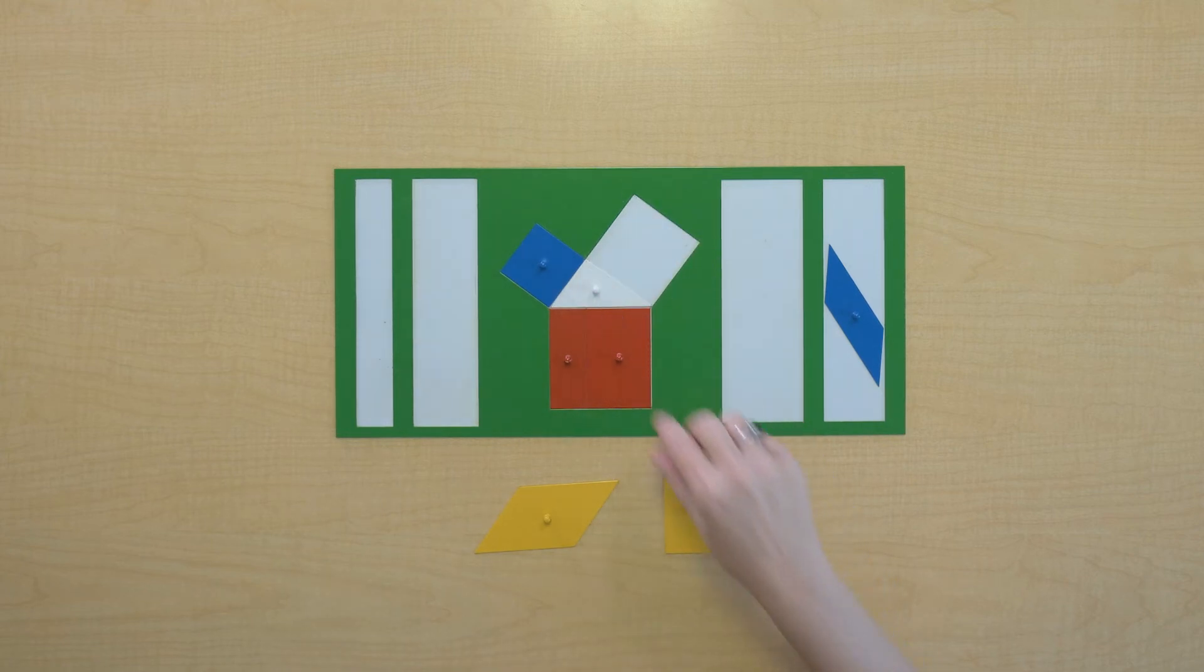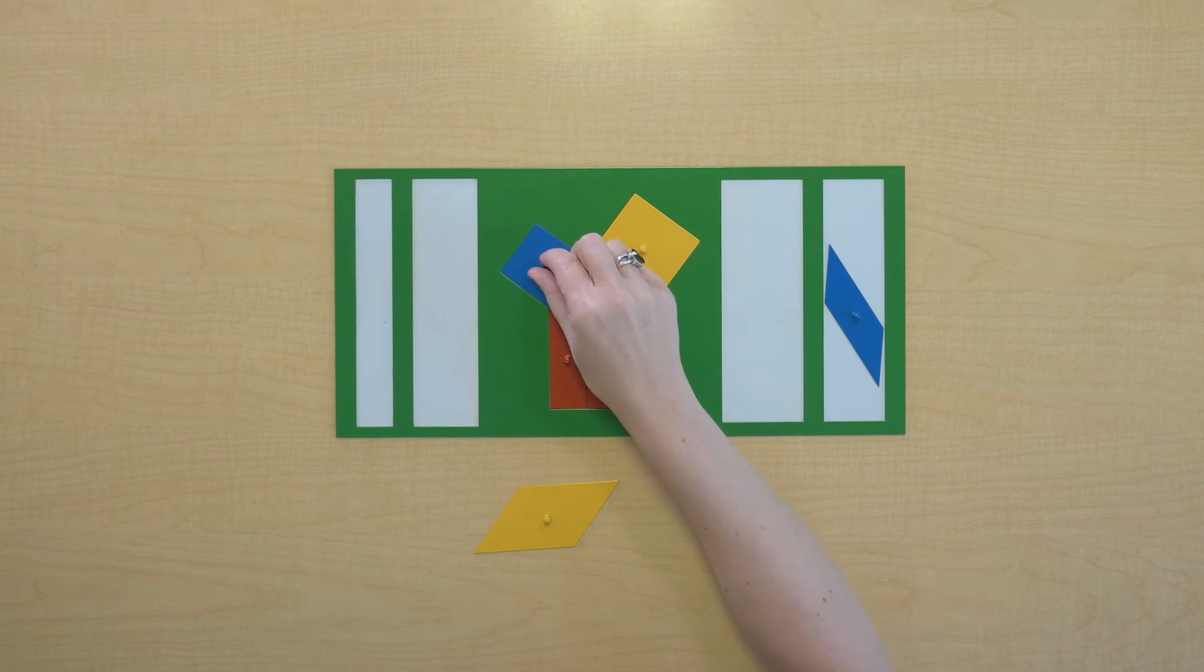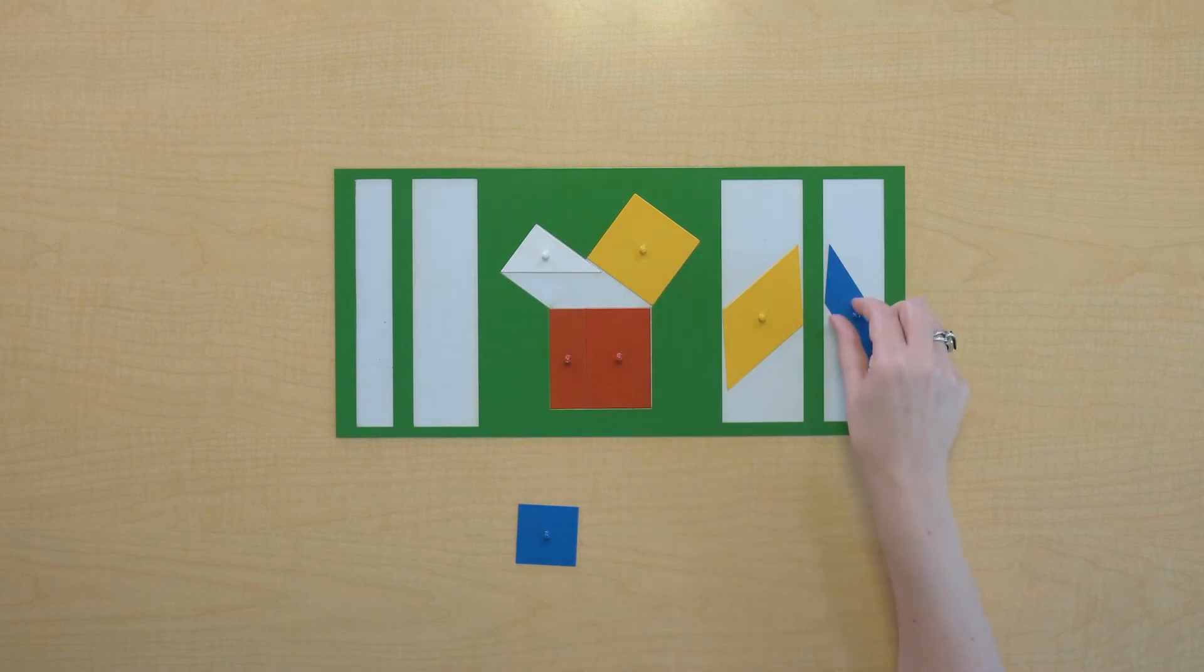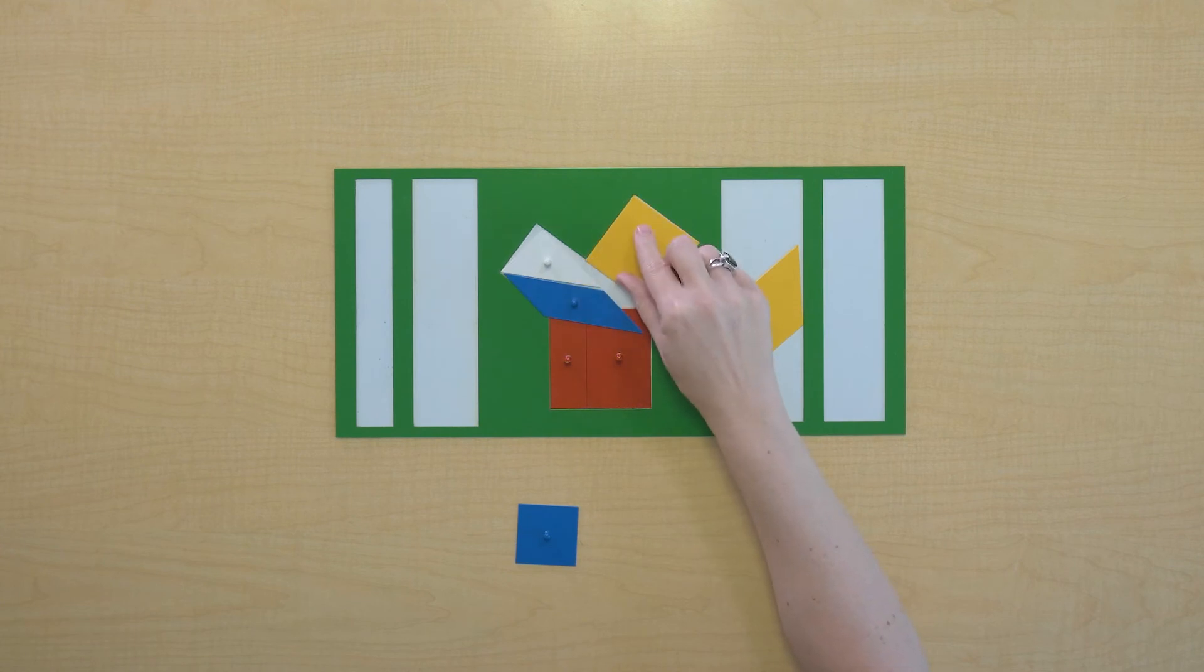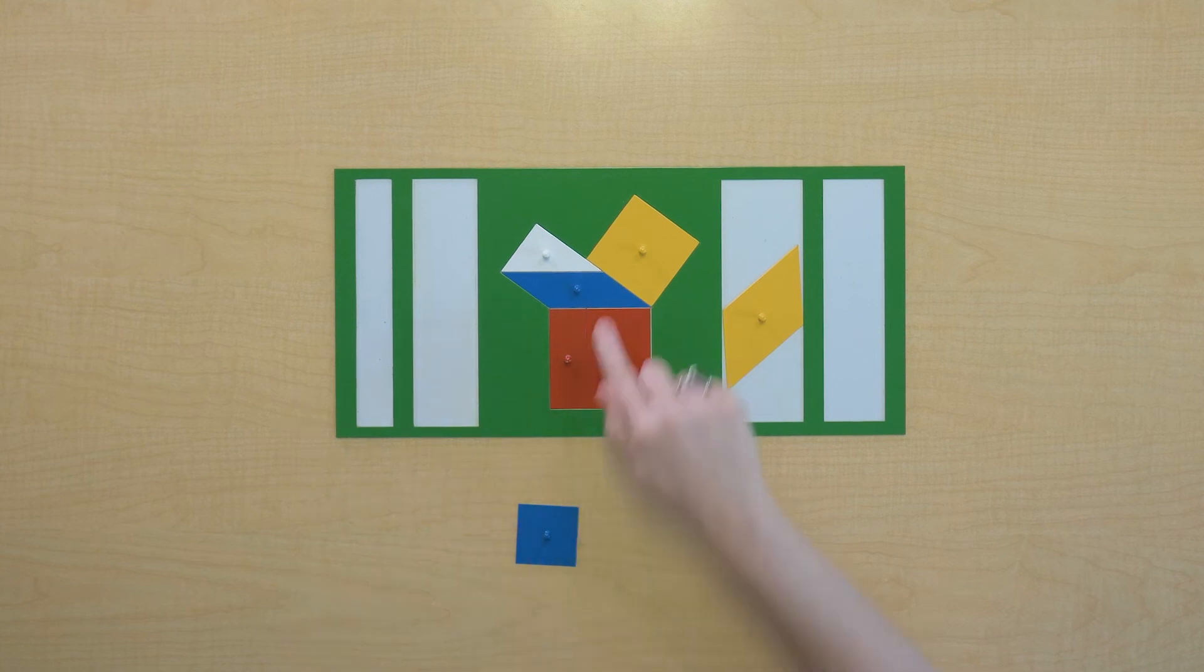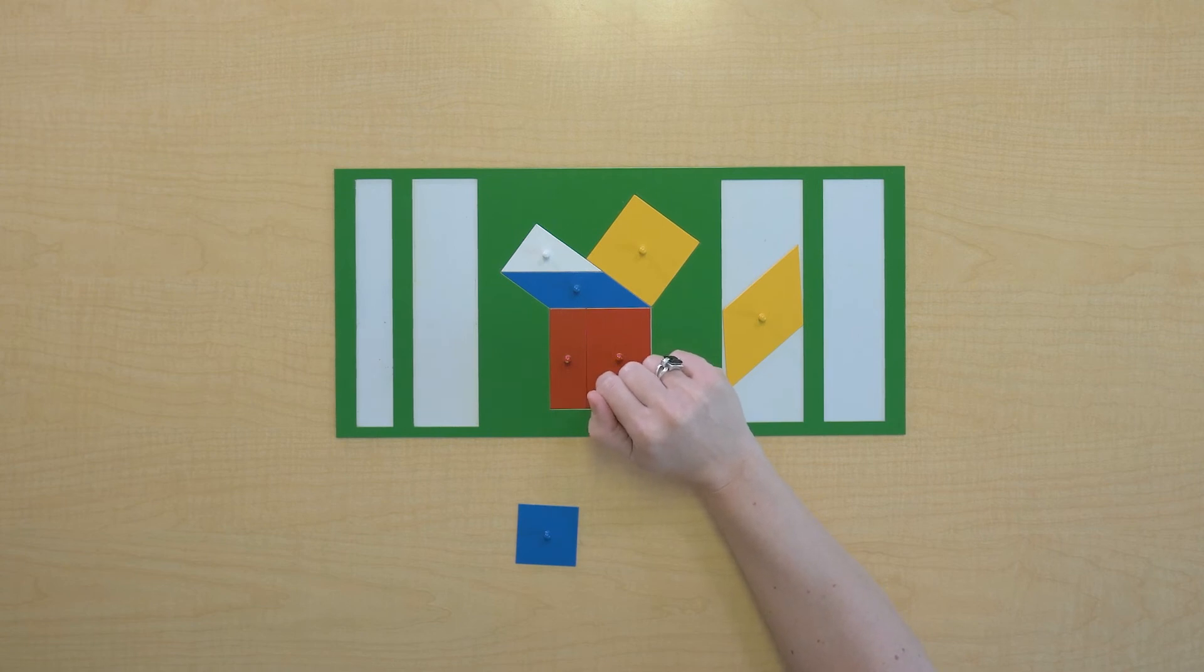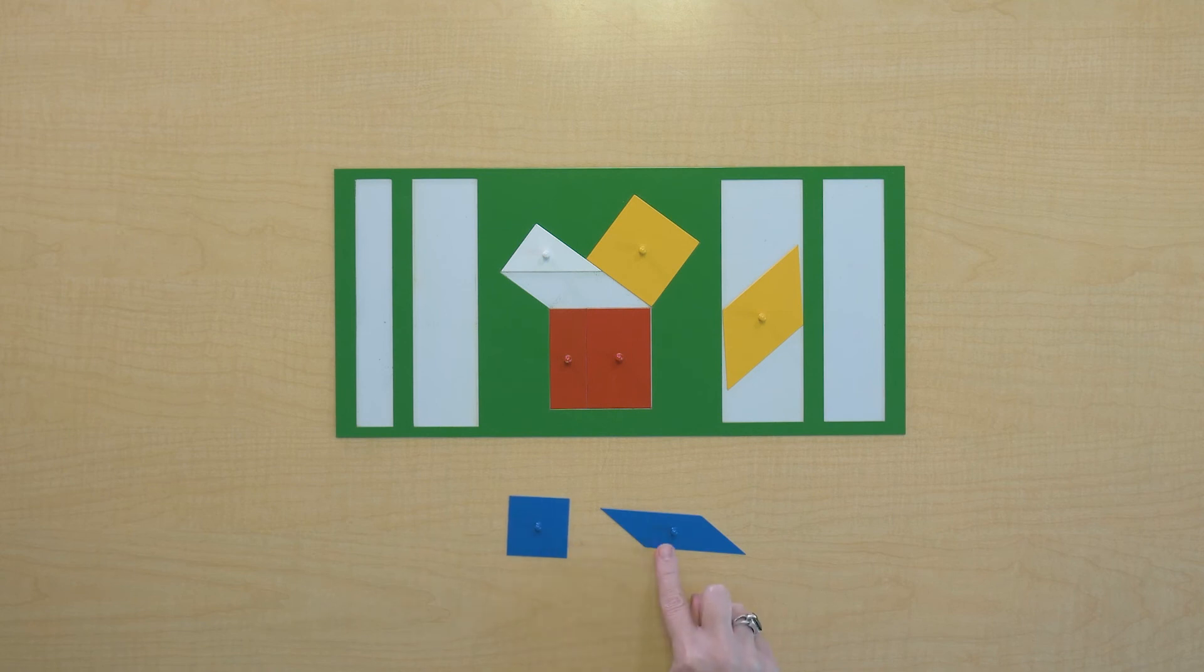Let's check and see what we can find out about the blue square. We'll use the whole space again. This blue parallelogram is taking up the same amount of space as the blue square. So these two shapes, the blue square and the blue parallelogram are equivalent.